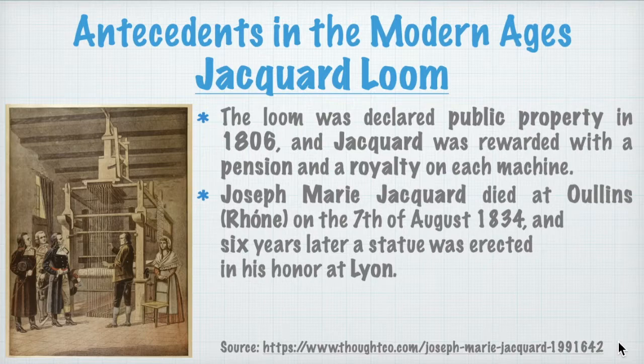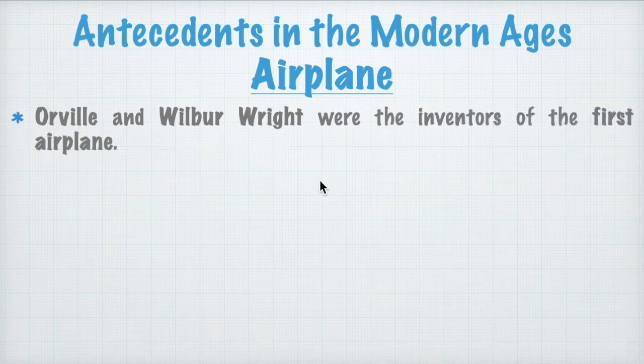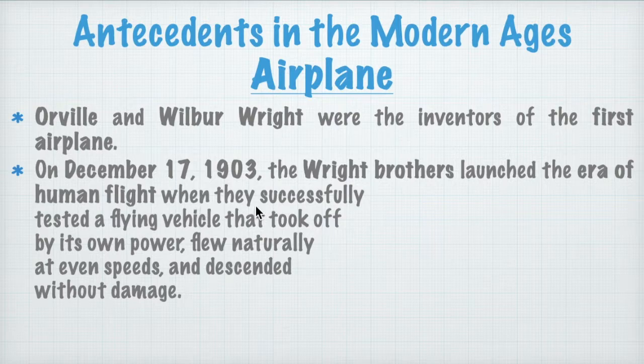Let's talk about airplanes. The inventors are the Wright brothers — specifically Orville and Wilbur Wright. On December 17, 1903, the Wright brothers launched the era of human flight when they successfully tested a flying vehicle that took off by its own power, flew naturally at even speeds, and descended without damage.